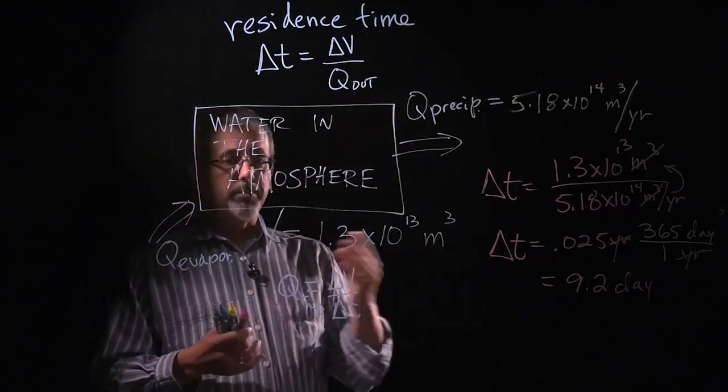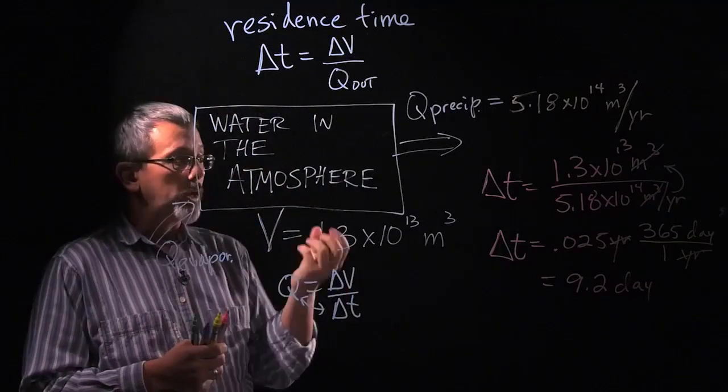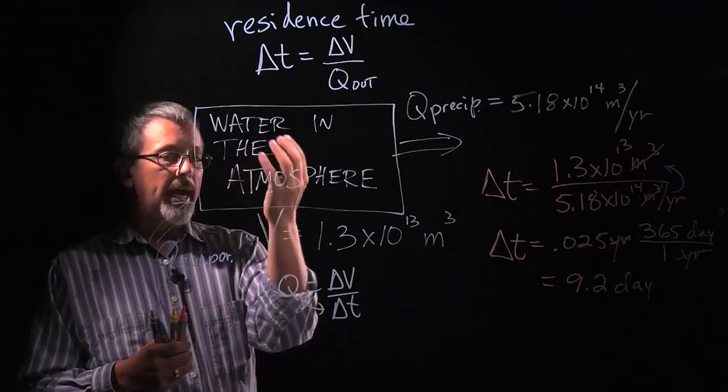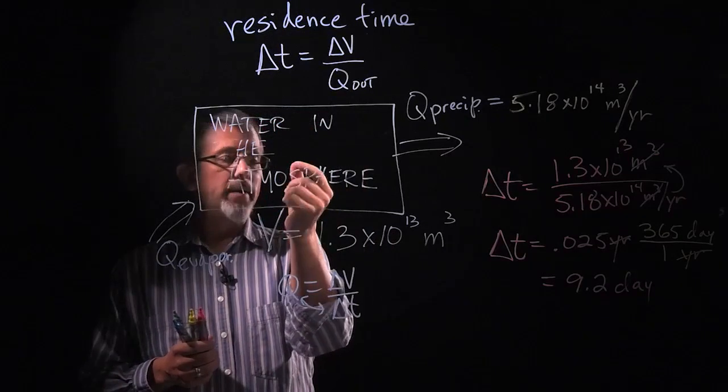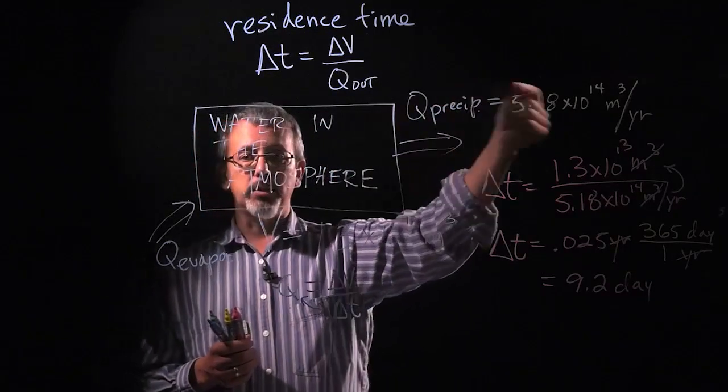So what this means is that all the water in the atmosphere, if you're a little droplet of water, you get evaporated, you come in here through evaporation, you spend an average of about 9.2 days in the atmosphere before flowing out to precipitation.